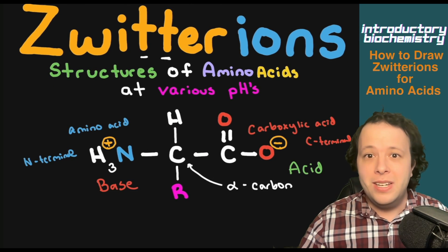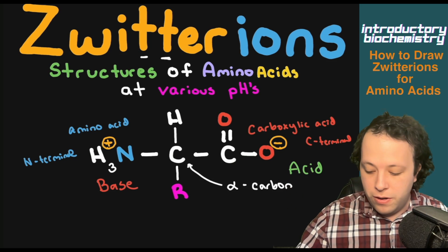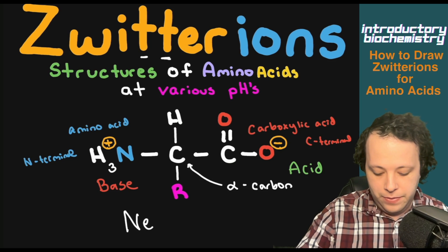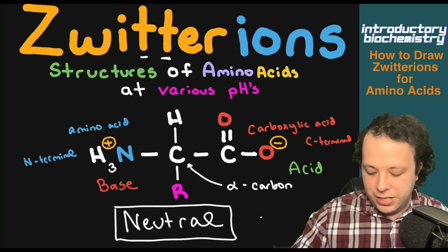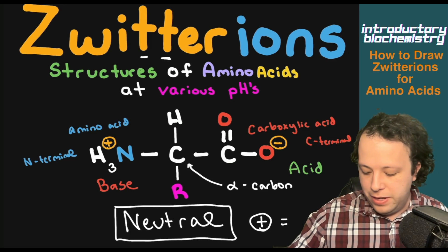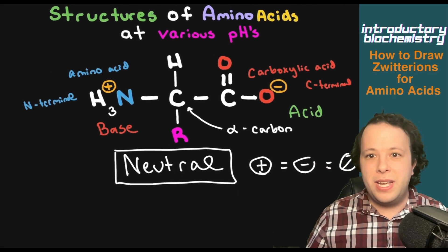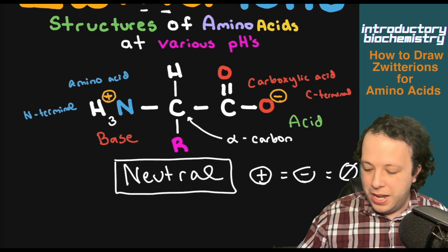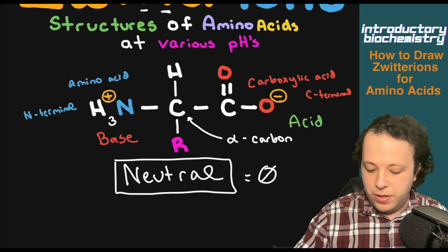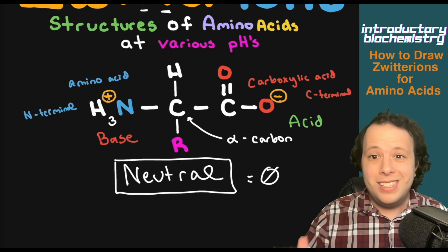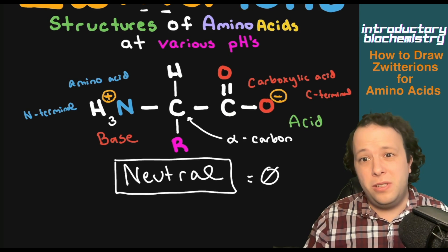Those two charges are overall neutral. When we have that neutral charge, the positive cancels out the negative, making an overall zero charge. So we have a zero charge when those two charges combine together. Neutral means zero overall. Let's go through some different examples of how we can apply this and look at some tips and tricks.